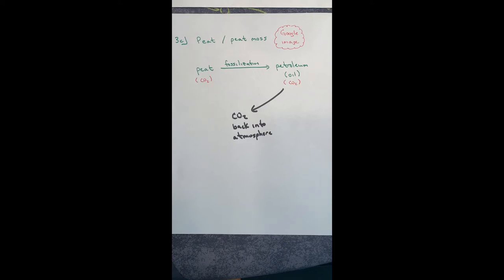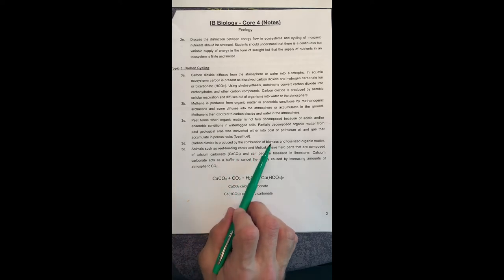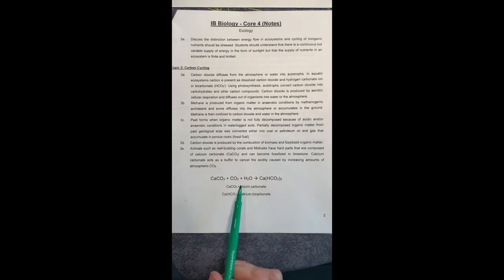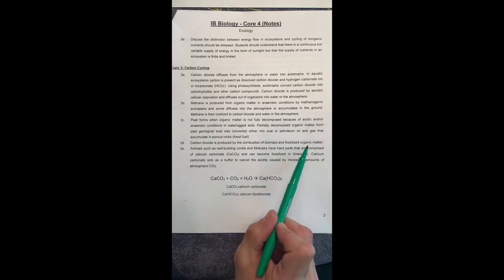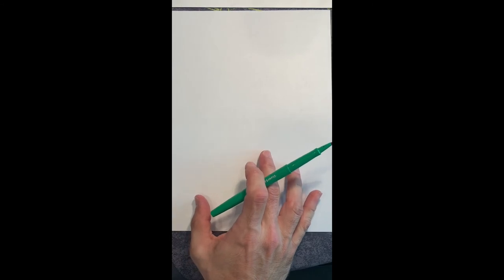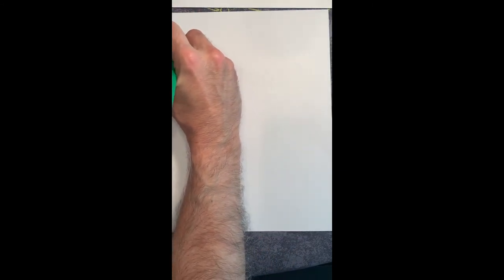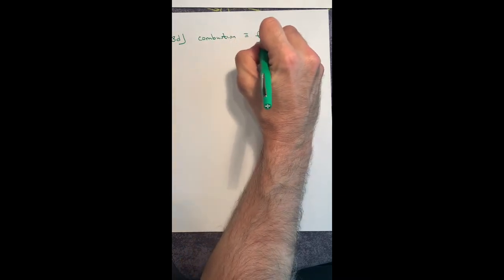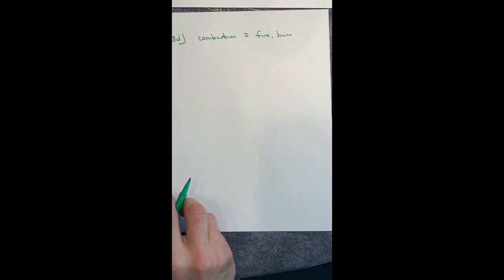So that is 3C, peat moss. So let's take a look at 3D. 3D says carbon dioxide is produced by the combustion of biomass and fossilized organic matter. Most people don't think of gasoline and diesel as biomass. They don't think of it as fossilized organic matter. That's what it is. That's why we call it a fossil fuel. Start connecting all of these dots. So 3D. Combustion. Combustion means fire, explosion, to burn.